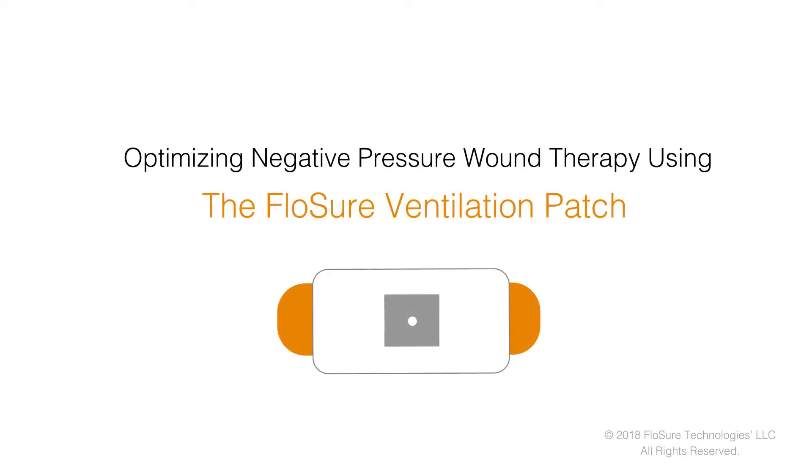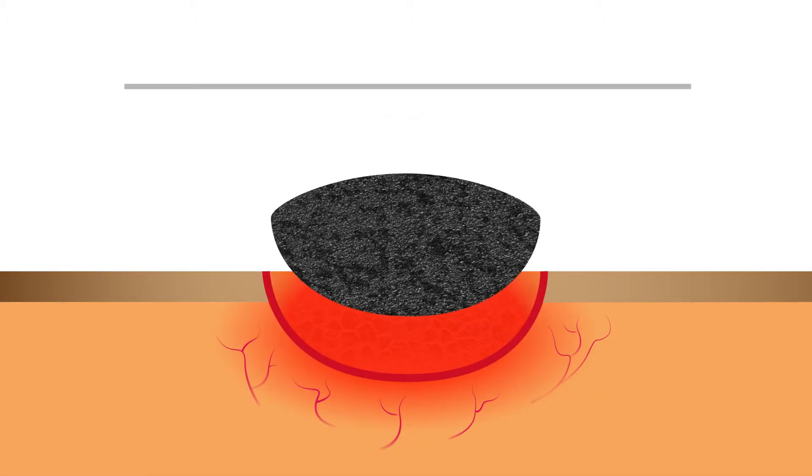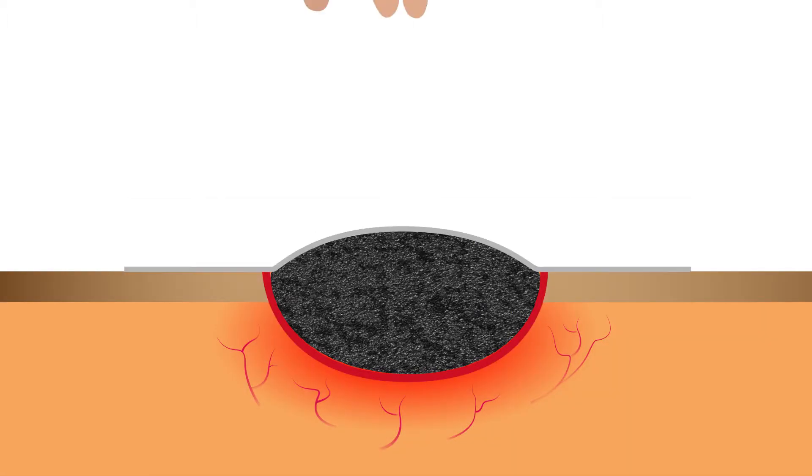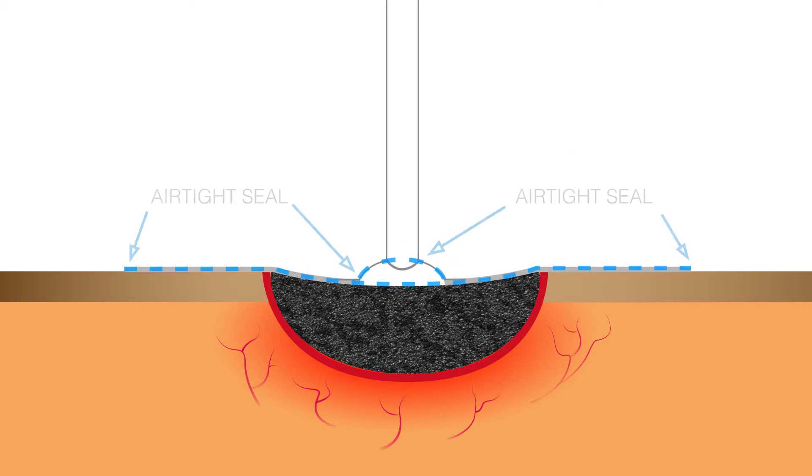Optimizing negative pressure wound therapy using the FloSure Ventilation Patch. Negative pressure wound healing is a highly effective and safe therapy that has been used by clinicians for many years with excellent results. Proper dressing protocols for negative pressure wound therapy require an airtight seal to prevent contamination.